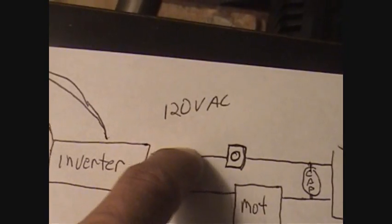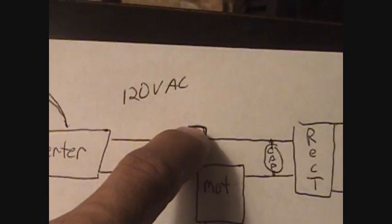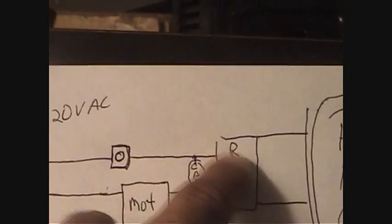This other wire that comes out of the inverter which is 120 goes through this dimmer switch straight to the rectifier.